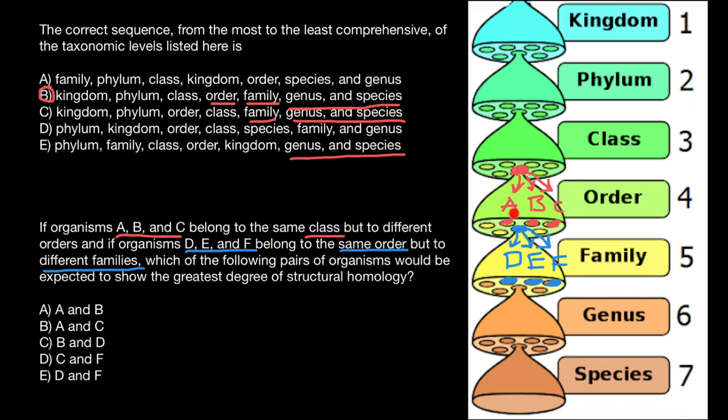Now, you can see that organisms that belong to the same order but to different families would be much more homologous than organisms that belong to the same class but to different orders.